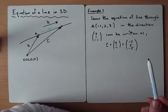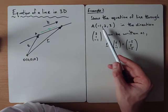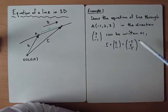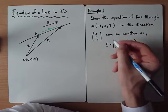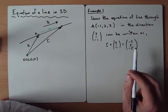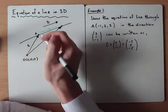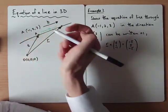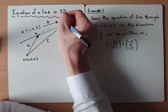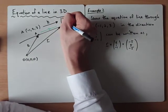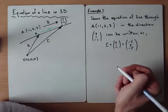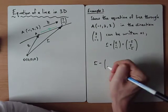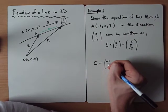Let's take one more example on this. It says show the equation of the line through the point (-1, 2, 3) in the direction (2, 1, -1) can be written in this form. So we're thinking about the cross product version of the line. If you're looking at your diagram here, the point A is (-1, 2, 3). The direction that the line is going in is (2, 1, -1).